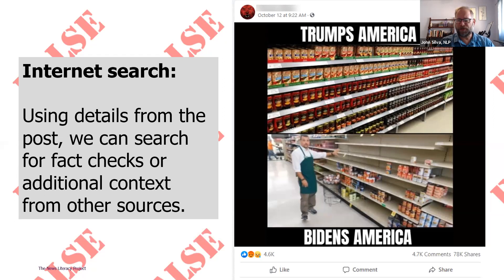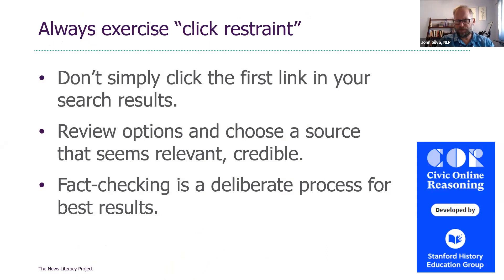The second skill is a reverse image search — I'll demonstrate how in a minute. Basically it tries to match the pixel pattern of one image with images in a search database, so we can use it to find other versions of these images and see if we can verify when and where they were taken. Third, we can open up a web browser and search for details — do some deliberate internet searching, find context and additional sources, and see if somebody has done a fact check on the image.